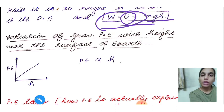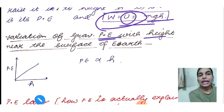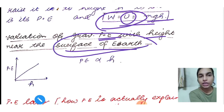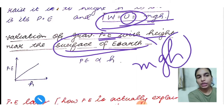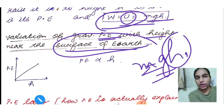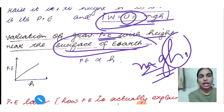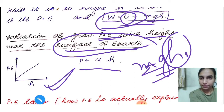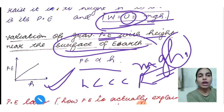Regarding the variation of gravitational potential energy with height near the surface of Earth — remember to always mention this condition — the formula is mgh. Near Earth's surface, g is constant and mass is constant, so potential energy is directly proportional to height h. The more height you reach, the more work you do, and that work is stored as potential energy. The graph is linear, valid only when h is much less than R.